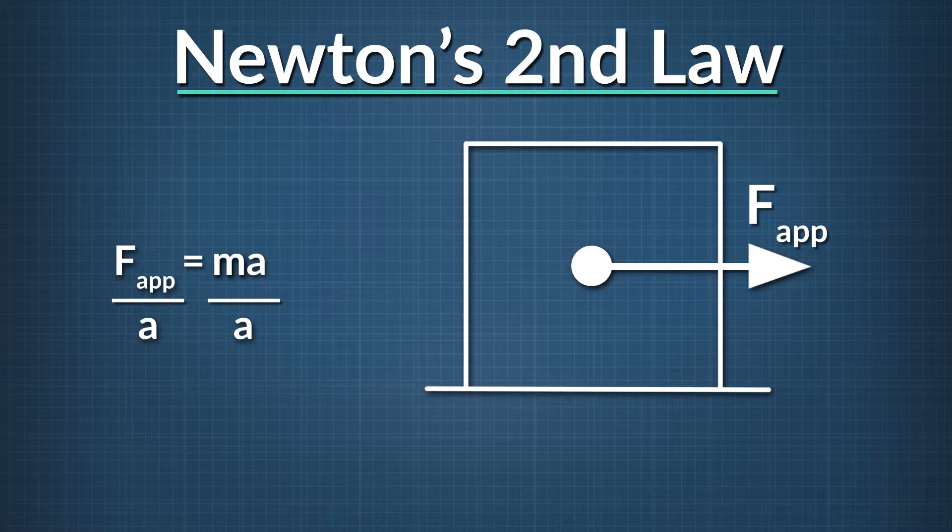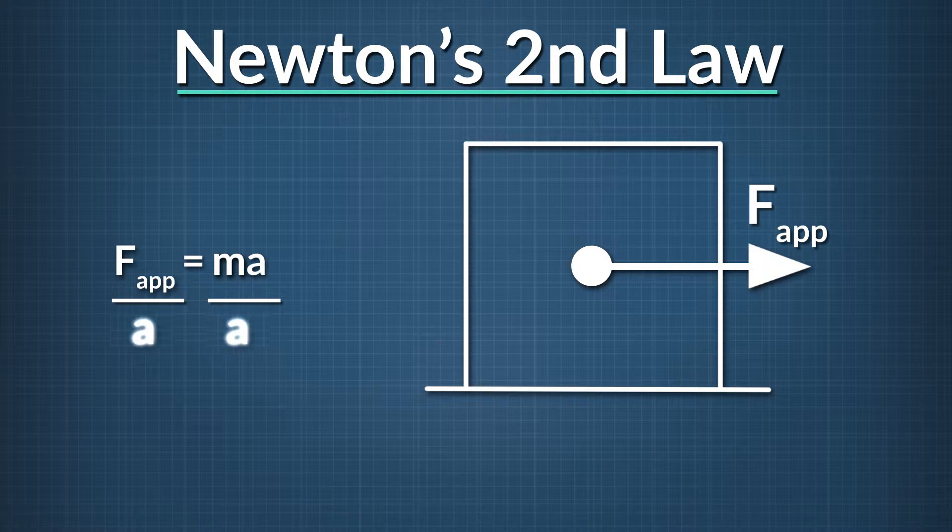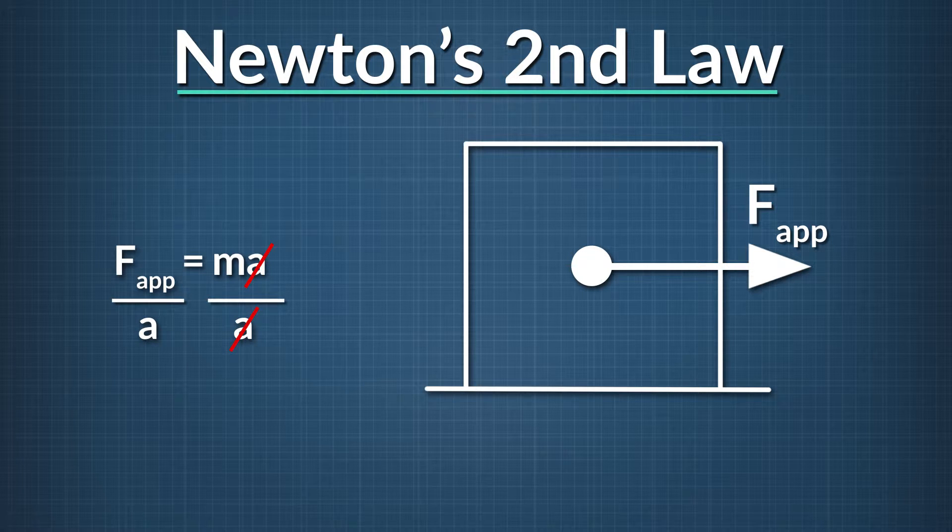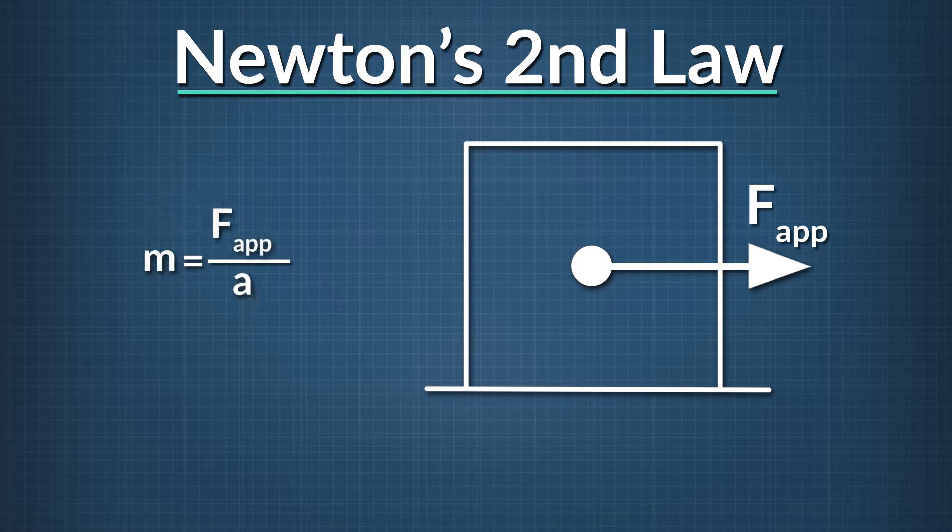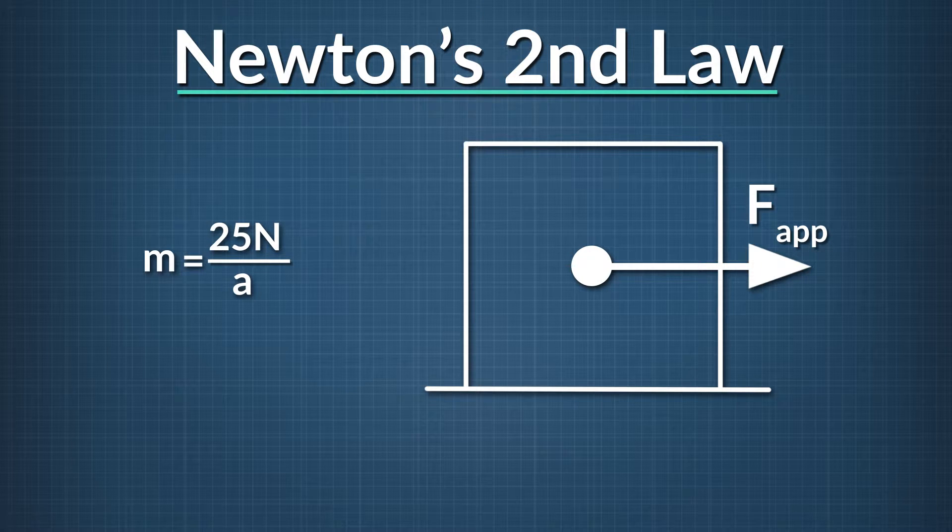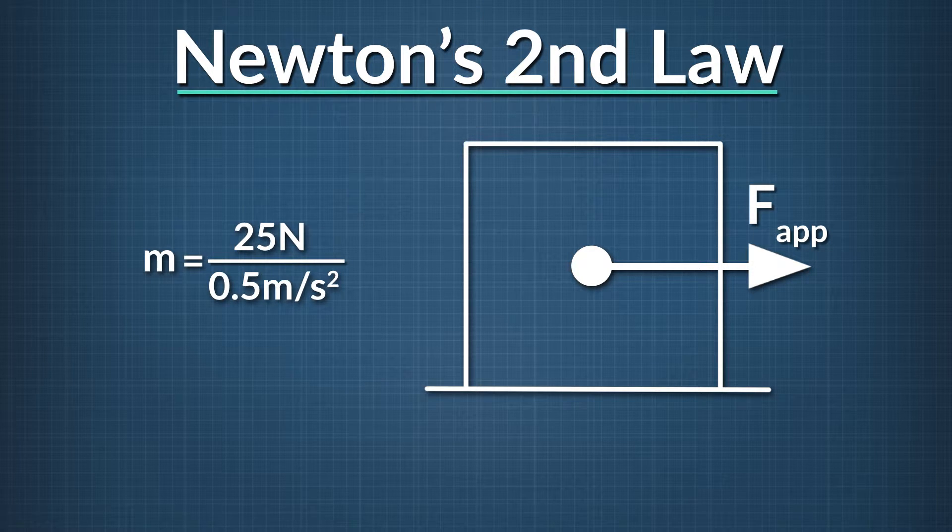Dividing both sides of the equation by the acceleration, A, we see that the box's mass equals the applied force divided by A. We can now plug in the values we know for F applied and A. F applied is 25 Newtons and A is 0.5 meters per second squared. The mass of the box is 25 Newtons divided by 0.5 meters per second squared, which is 50 kilograms.